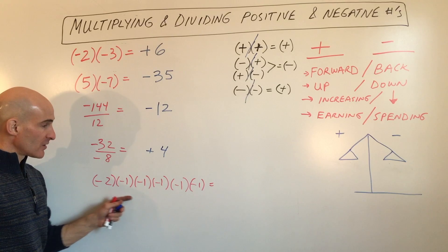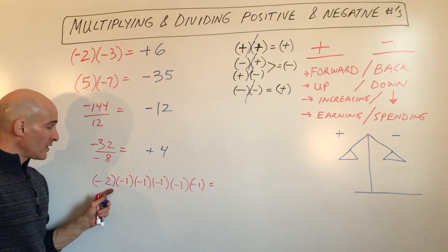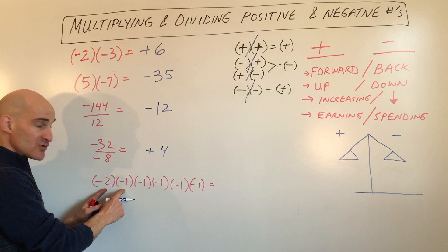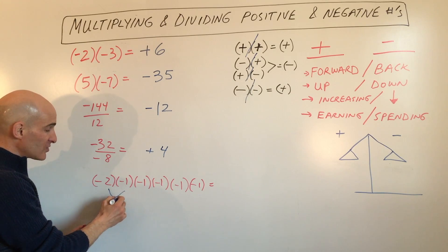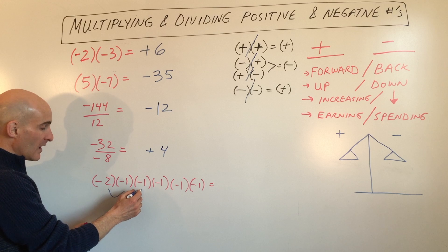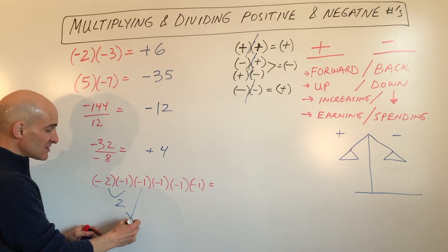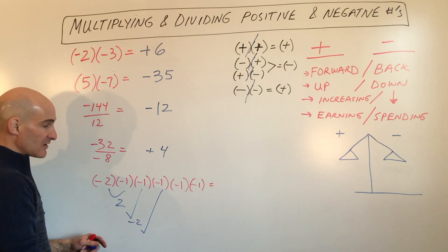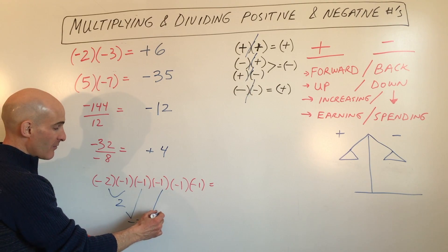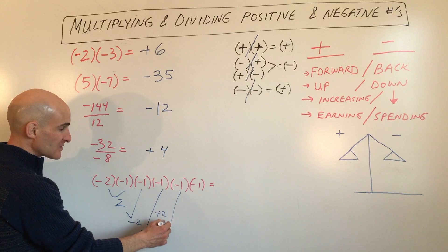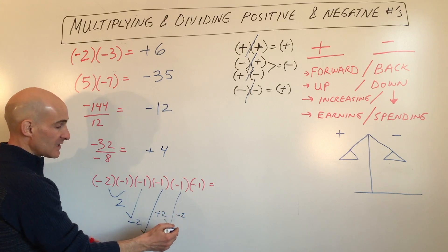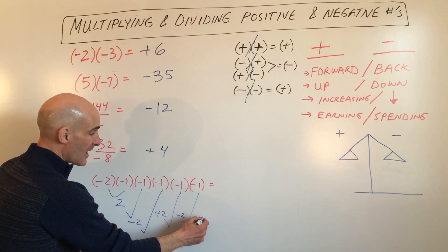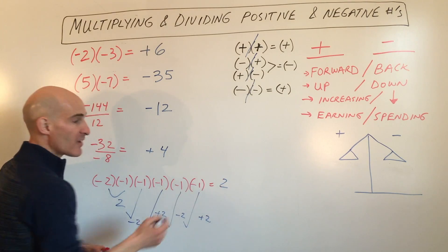This last example is a little bit trickier — we've got a whole group of numbers multiplied together. Negative 2 times negative 1 is positive 2. Then 2 times negative 1 is negative 2. Negative 2 times negative 1 gives us positive 2. Positive 2 times negative 1 is negative 2. And negative 2 times negative 1 is positive 2. So the final result is positive 2.